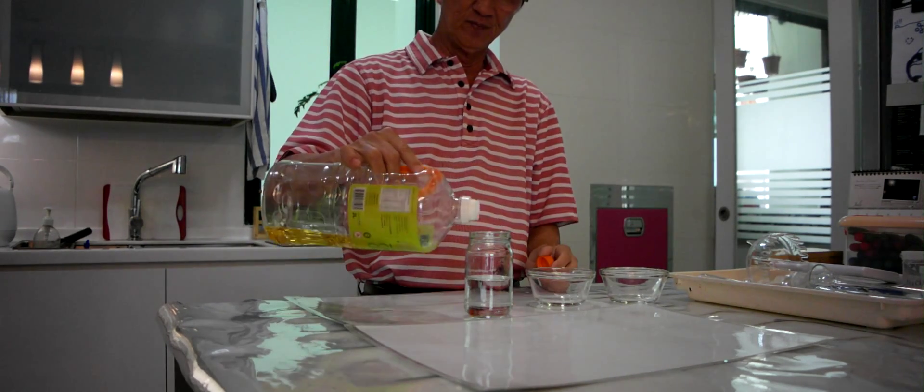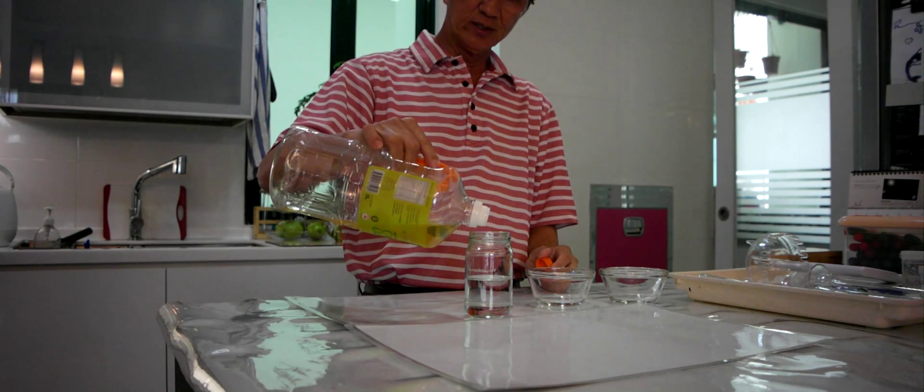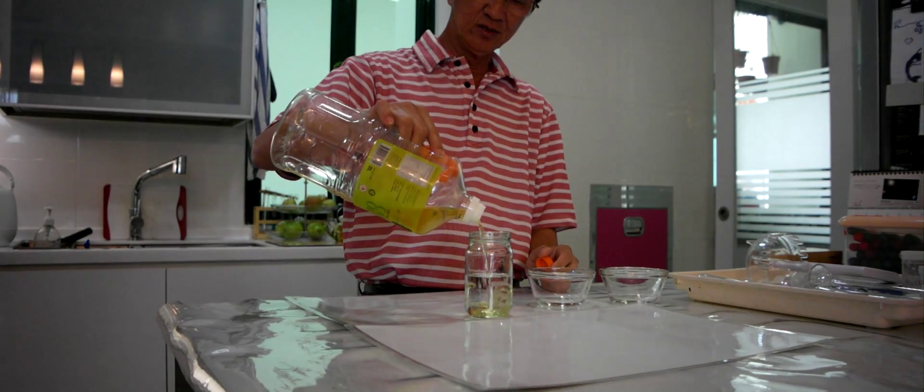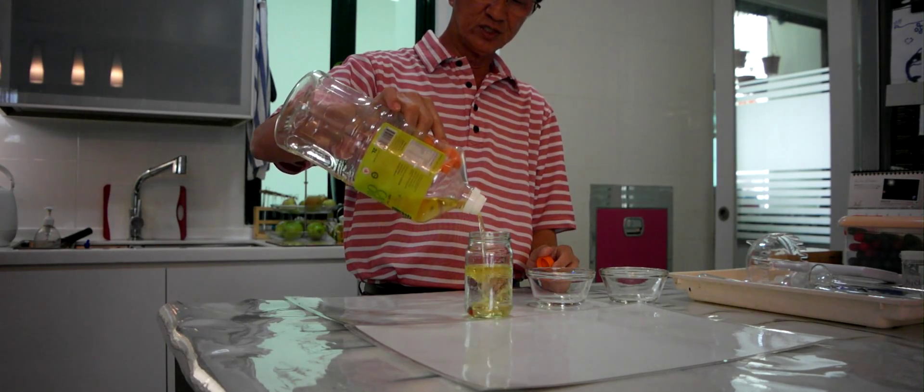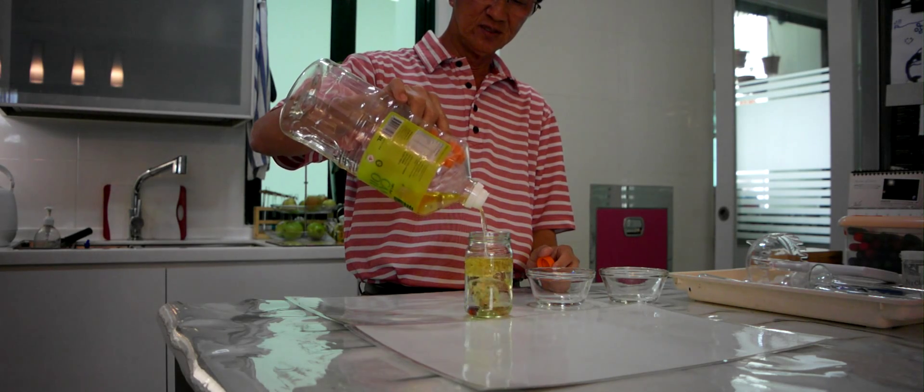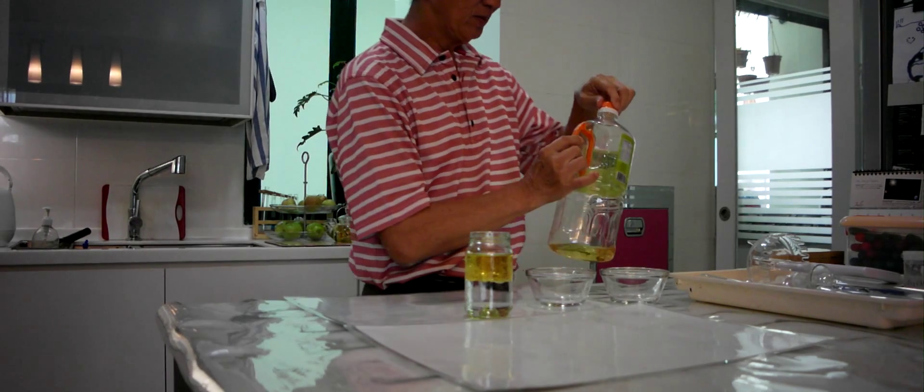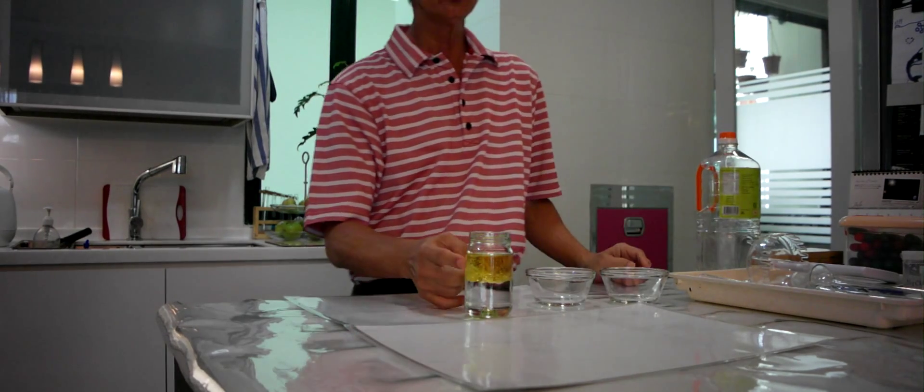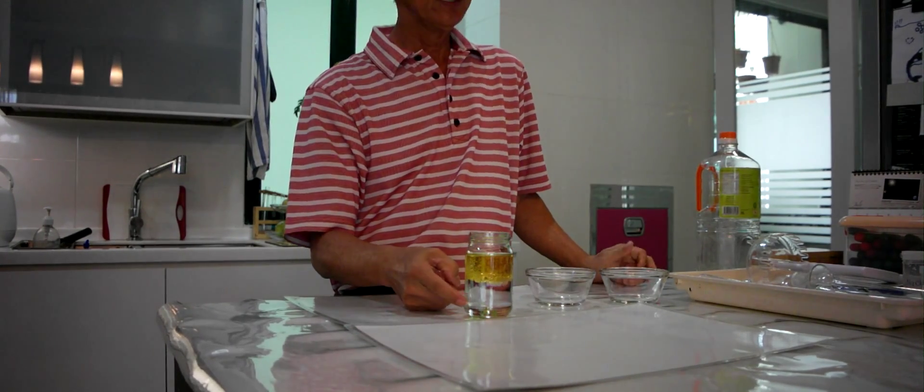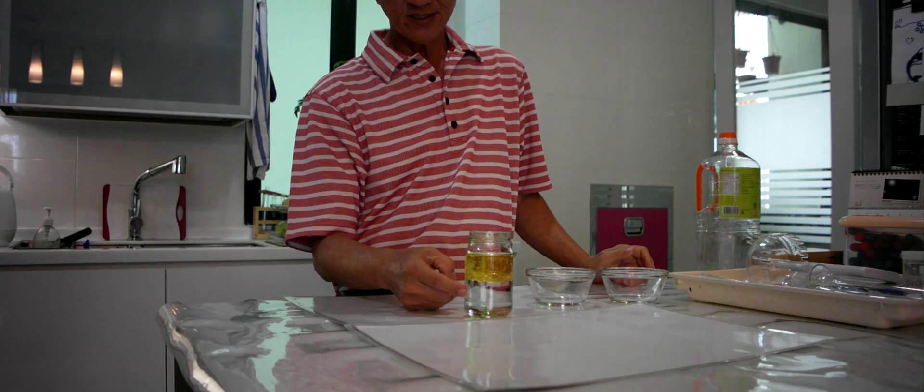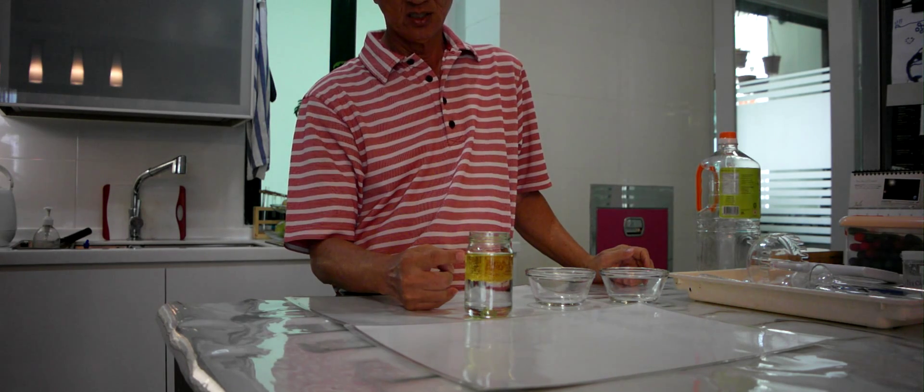This is water. So your canola oil flows to the top. Can you see? So you have the problem of separating these two liquids. The colorless liquid is water, which is denser, and the oil, which is on top.